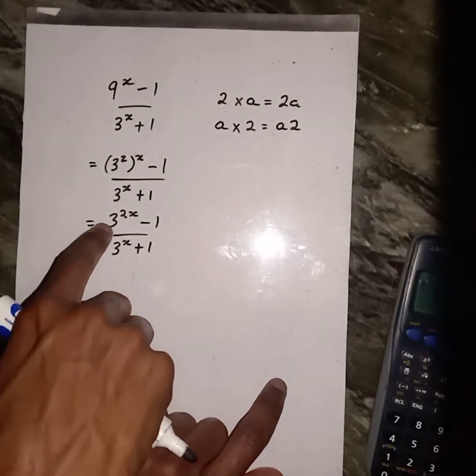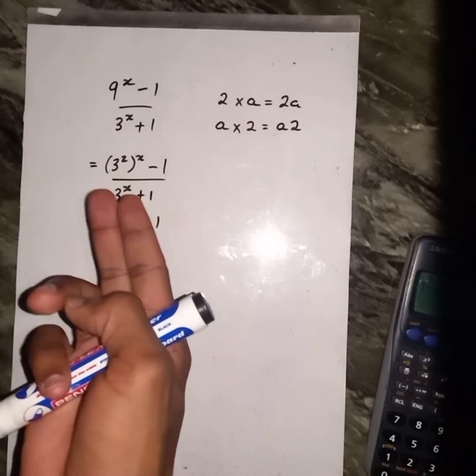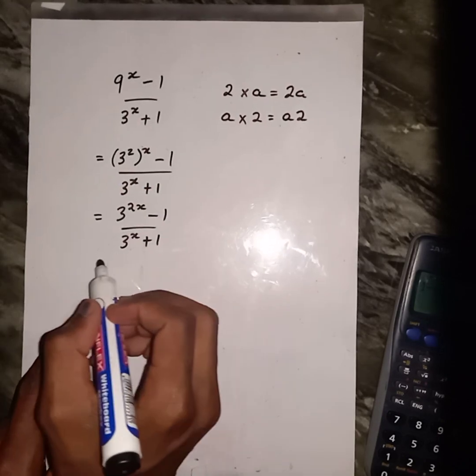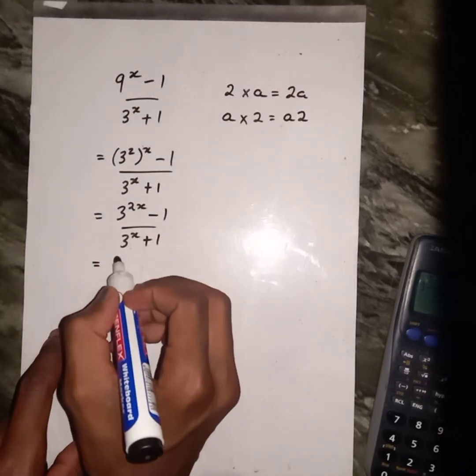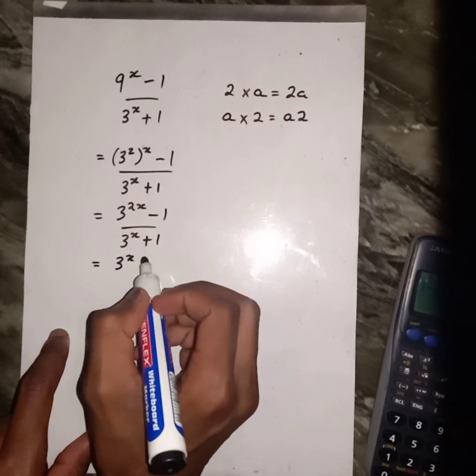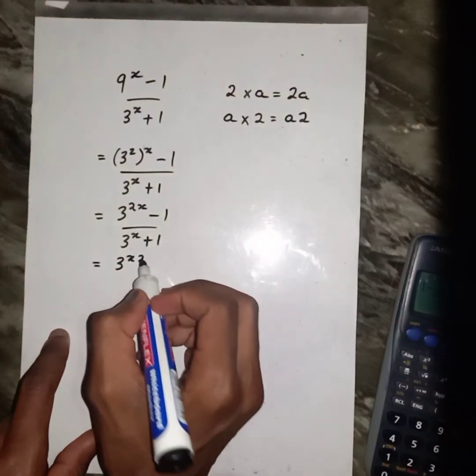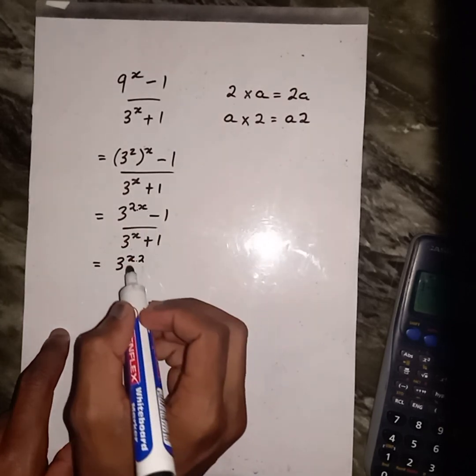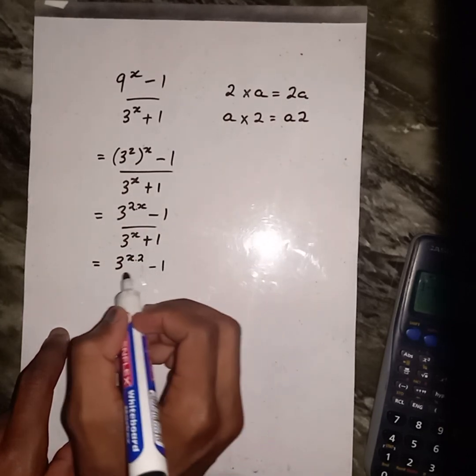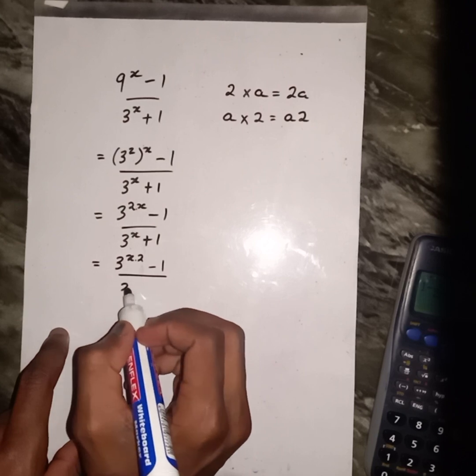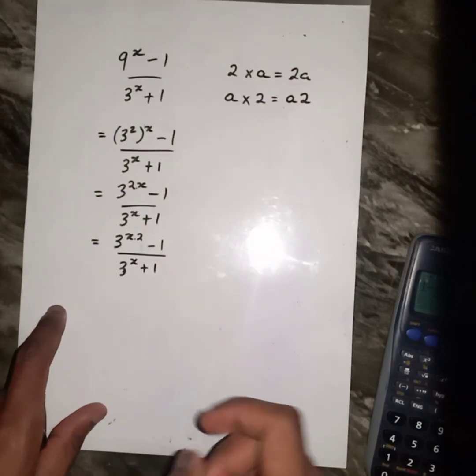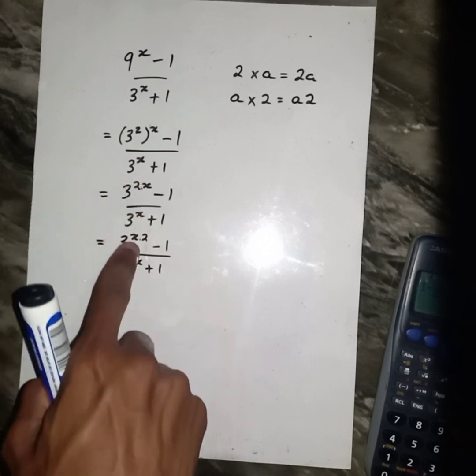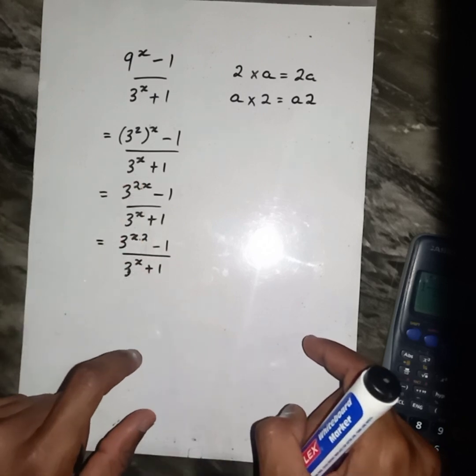It's like now on this one. If I were to swap x and 2 like this. But I have a multiplication sign in between. Minus 1, 3^x plus 1. These two things, they are the same.